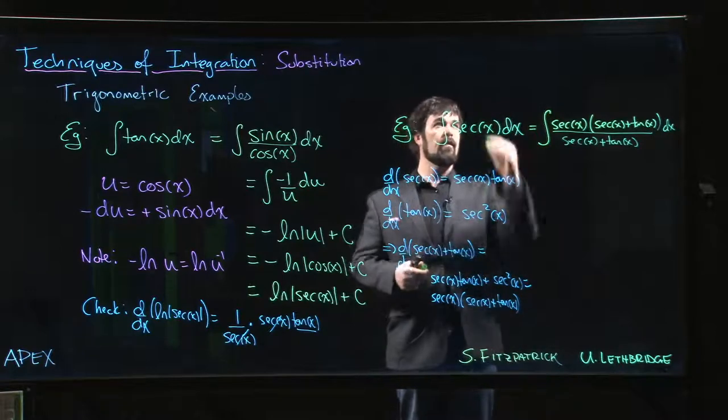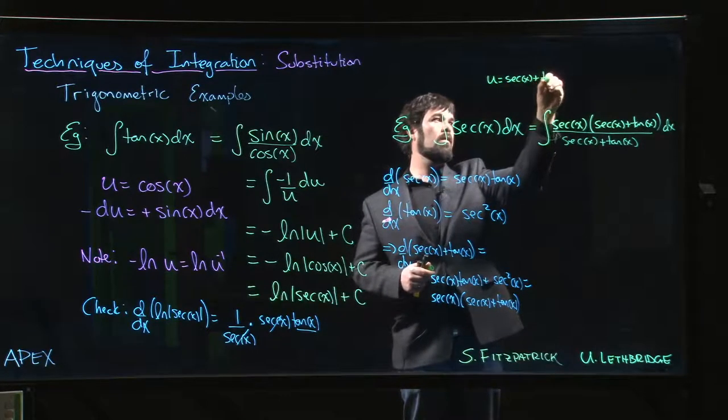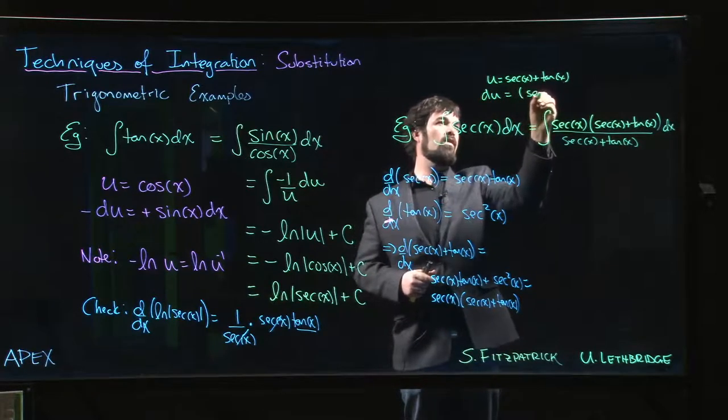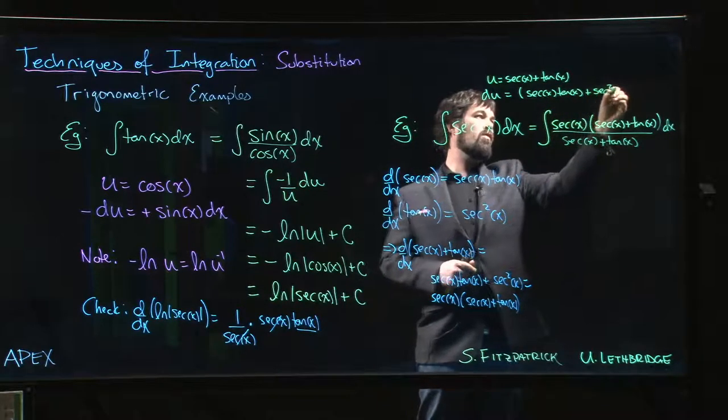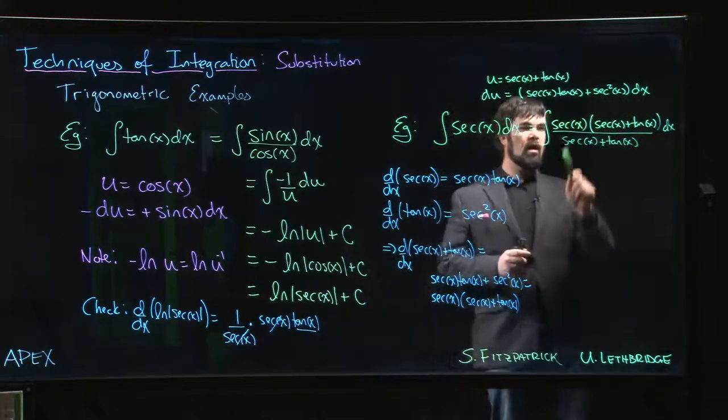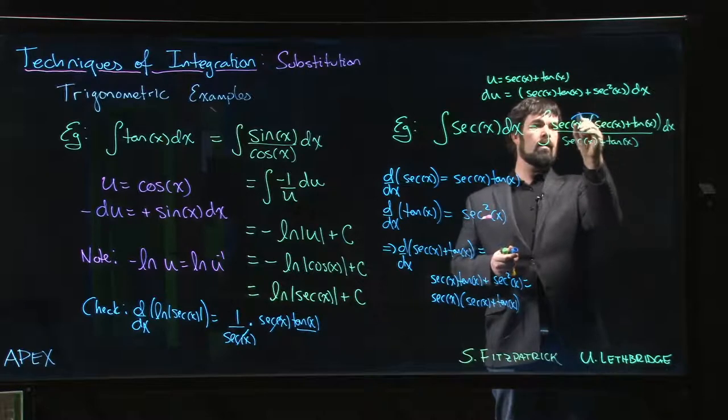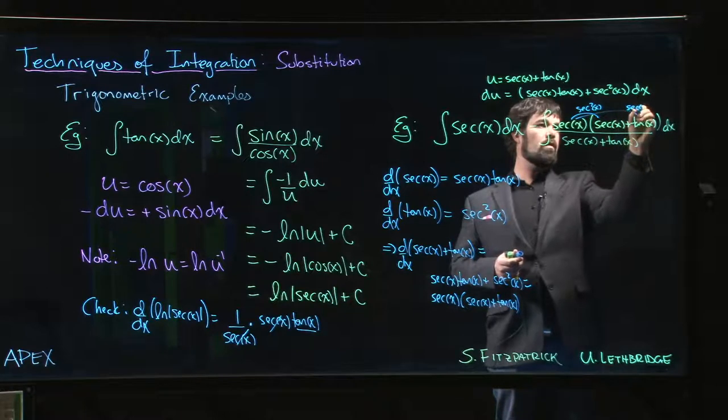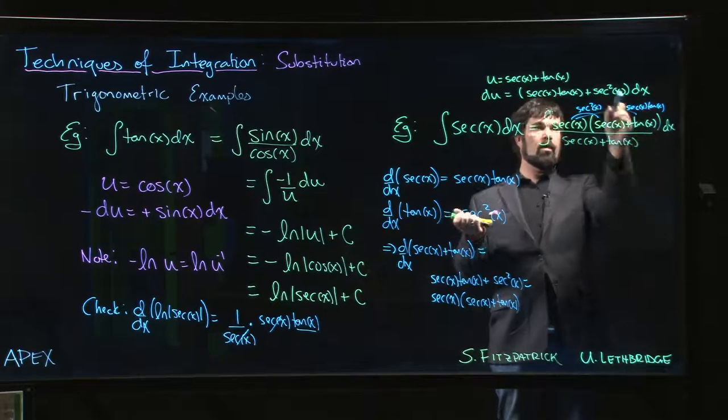I'm going to let u equal secant x plus tan x so that du is secant x tan x plus secant squared x times dx. And we realize that we have it sitting right here. Multiply out the top: this is secant squared, this is secant times tan. So there we go. That's du. We're in business.